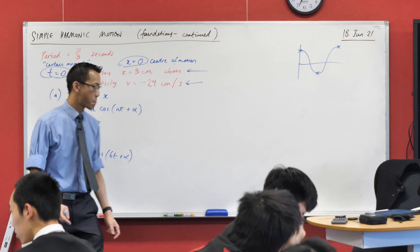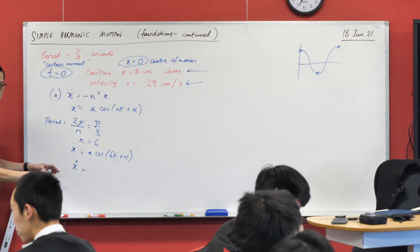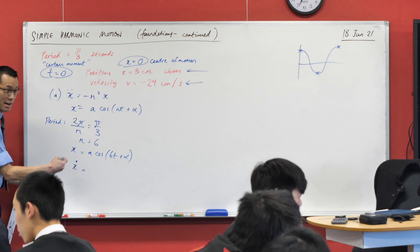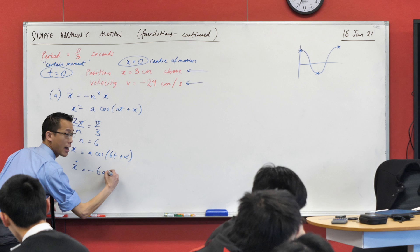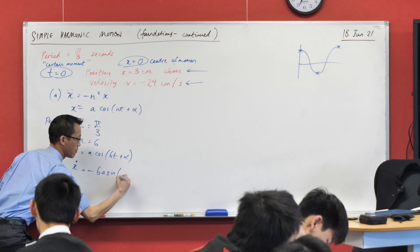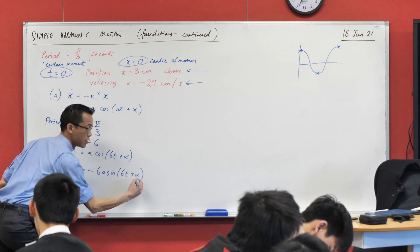Someone go ahead and tell me what x dot is. You can pretty much just read it off, right? Minus 6a and then my cos turns into sine.